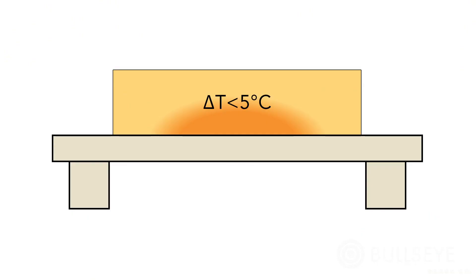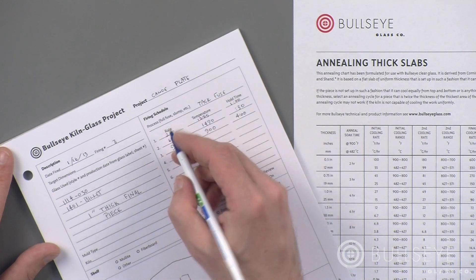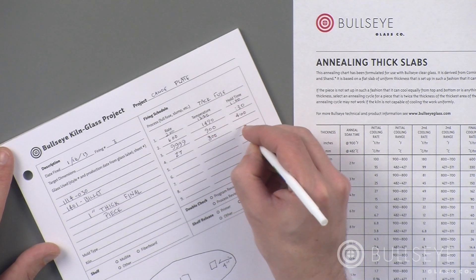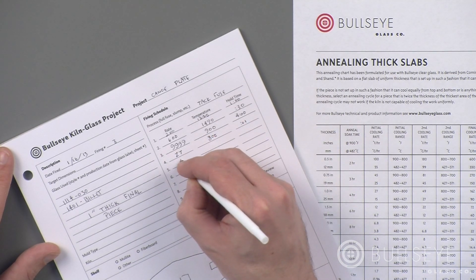The first step in successfully annealing your piece is to calculate its final thickness. The goal here is to keep the internal temperature differences below 5 degrees Celsius. Temperature differences higher than this can lead to permanent strain. Once you work out the final thickness, follow the annealing hold and cooling rates found on Bullseye's annealing chart for thick slabs.